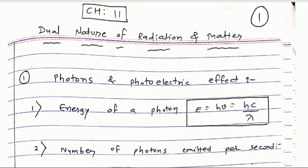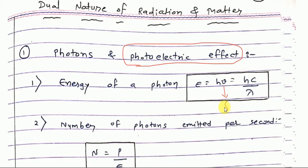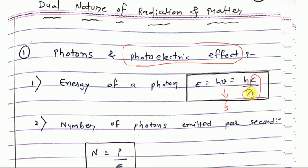The very important topic of this chapter is the photoelectric effect. In the NCERT syllabus we have gone through different experimental concepts, and based on that we have certain formulas related to photoelectric effect. The first formula is energy of photon: E = hν (also written as hf, where f is frequency). In place of f you can write c upon λ, where c is speed of light and λ is wavelength. So please keep in mind: energy of photon E = hc/λ.